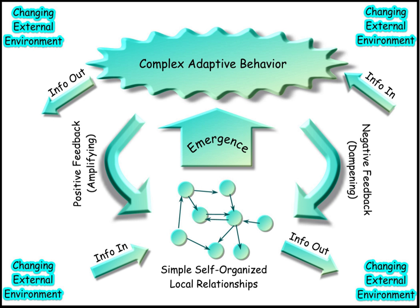Systems Sciences are scientific disciplines partly based on systems thinking such as chaos theory, complex systems, control theory, cybernetics, sociotechnical systems theory, systems biology, systems chemistry, systems ecology, systems psychology, and the already mentioned systems dynamics, systems engineering, and systems theory.